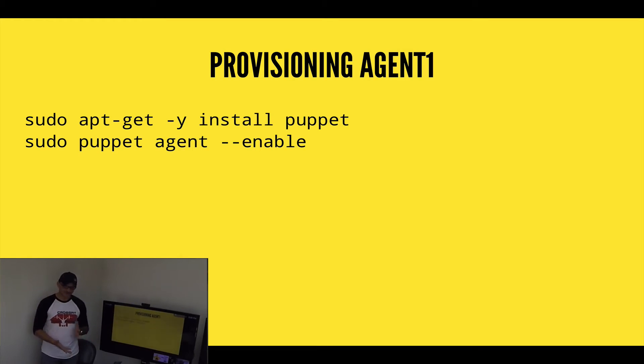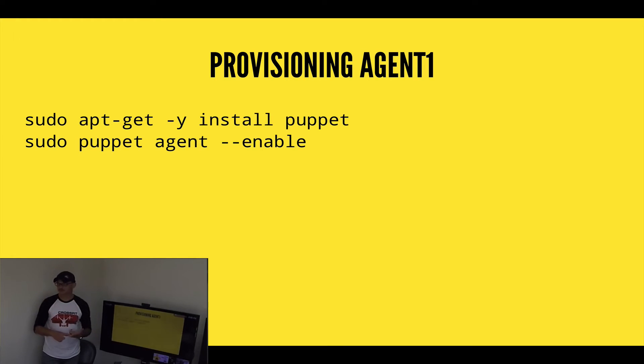That's it for the Puppet Master. Now we're provisioning the agent, and that is much, much simpler. We just install Puppet, enable the service, and that kicks off the run.